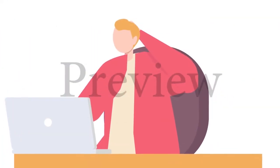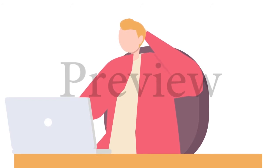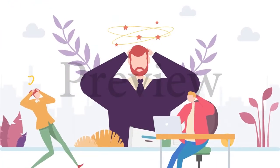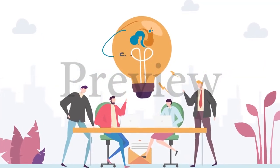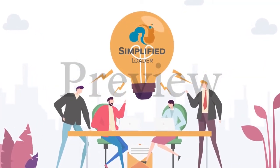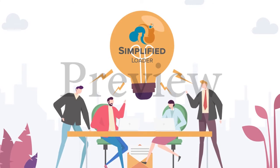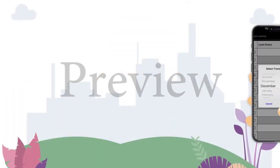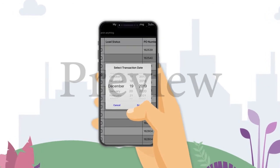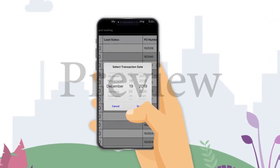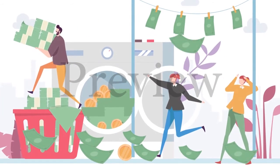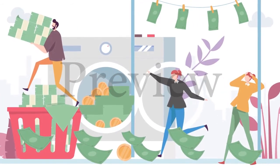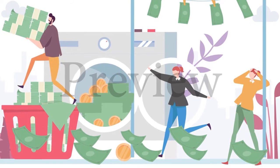Does your organization suffer the problem where at month end employees missed the receipt submission deadline? This is a real headache for the finance department. The Simplified Loader purchase order receipts app makes this problem a thing of the past. Simply enter a date within an open GL period and get the receipt accounted in the right period every time. No more finance team chasing your staff.